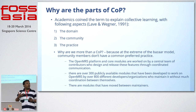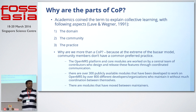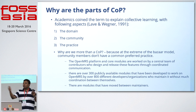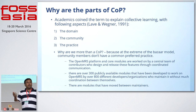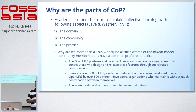So what are the parts of a community of practice? The concept was coined in academia by Lave and Wenger, and it talks about three main aspects: the domain, the community, and the practice. OpenMRS has a constant domain — medical informatics — and a community of people who work together to improve healthcare around the world. But the practice is quite different, and I'll get to how.